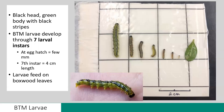Moving on to the BTM larva — they have a black head capsule, a green body, and black stripes that run along the length of the larvae. The larvae move through seven different growth stages, which we call instars, shown here moving from right to left. At egg hatch, the larvae are only a few millimetres in length, but can grow up to four centimetres by the seventh instar.